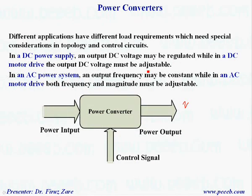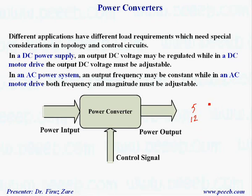Different applications have different load requirements which need special consideration in topology and control circuits. For example, in a DC power supply we need to generate regulated voltage at 5 volts or 12 volts depending on the application — the output voltage is almost constant. In another application, such as a DC motor drive, the output voltage should be adjustable because for variable speed we need to change the DC voltage; otherwise we cannot control the speed.